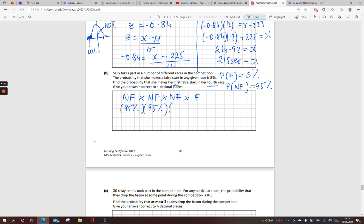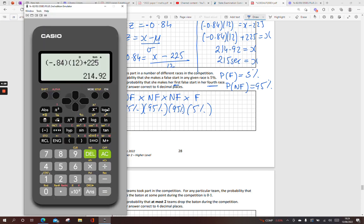So we just times those together. Now you can use percentages. You can use it as a fraction. Or you can use it as a decimal. Whatever way you like. So I might just type it as a decimal. It might be quicker. I'll go 0.95 to the power of 3 times 0.05. And you get 0.0429.